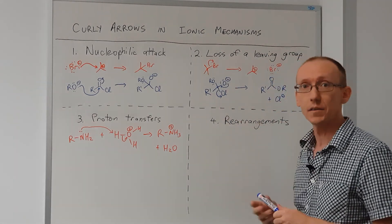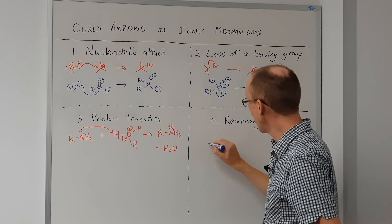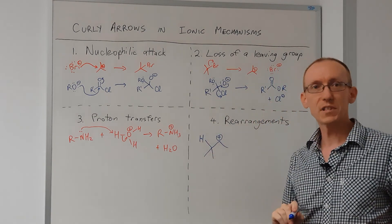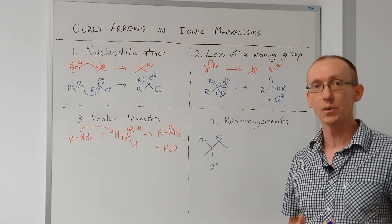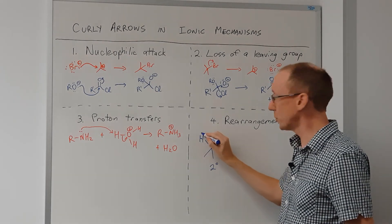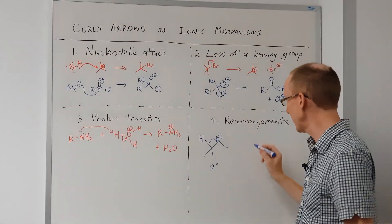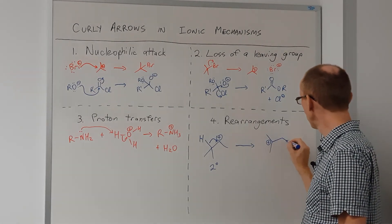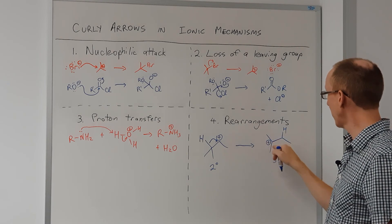Rearrangements are the last type of curly arrow that you might want to draw in an ionic mechanism. These are most common in carbocations, but you can also have carbanion rearrangements as well. An example might be where we generate a carbocation that's not particularly stable — this is a secondary carbocation — and it really wants to undergo some kind of reaction that will make it more stable. One of the things it can do is rearrange to generate a more stable carbocation. This pair of electrons in the sigma bond between the hydrogen and the carbon can move with the hydrogen atom to generate a new bond to the carbon that was part of the carbocation. If we follow that through, we'll have a new carbocation, and it's more stable because now it's a tertiary carbocation where the positive charge is located on this carbon.